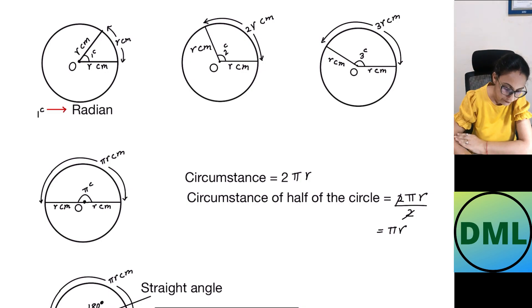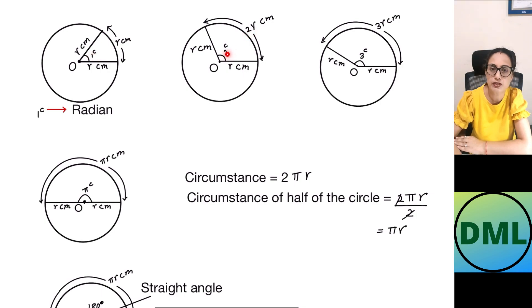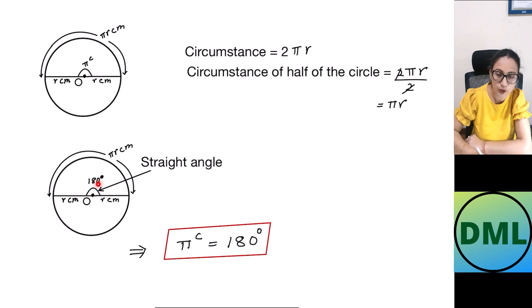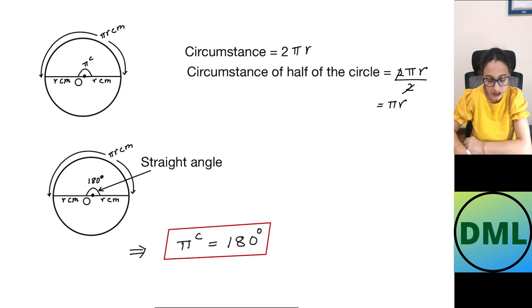What you are seeing from here: if the coefficient of r is 1, the angle subtended is 1 radian; if the coefficient is 2, the angle is 2 radians; if the coefficient is 3, the angle is 3 radians. Similarly, if the coefficient is π, the angle subtended is π radians. We know that this is a straight angle, and a straight angle is also equal to 180 degrees. So I can compare both: π radians equals 180 degrees. This is the relation between degree measure and radian measure that we will use to solve our questions.